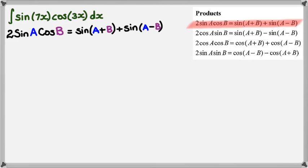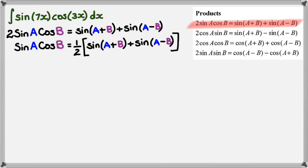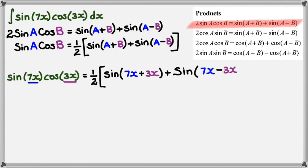So sin(A)cos(B) equals a half multiplied by what's on the right-hand side. We can rewrite sin(7x)cos(3x) as a half multiplied by sin(A+B) plus sin(A-B). A in this case is 7x, and B is 3x, so we have sin(7x + 3x) plus sin(7x - 3x). Simplifying, we get a half multiplied by sin(10x) + sin(4x).